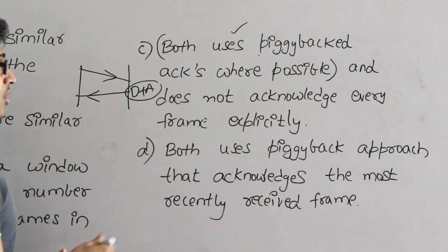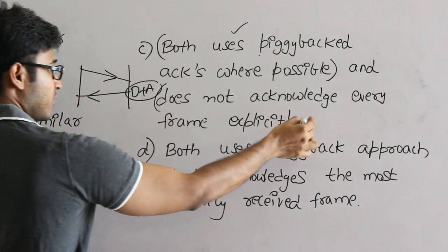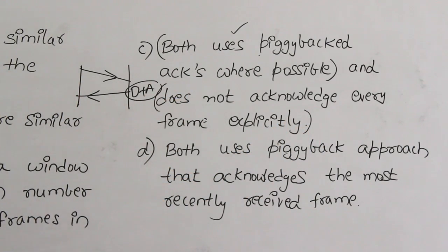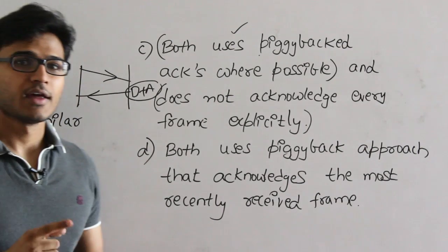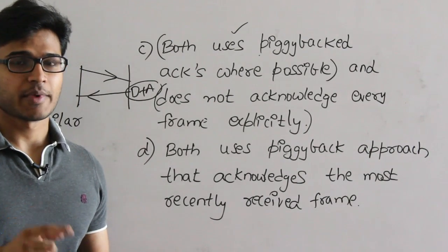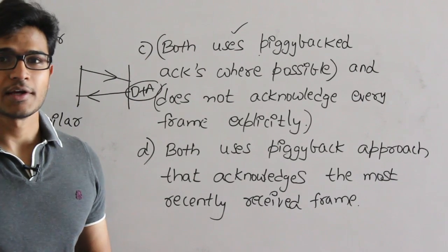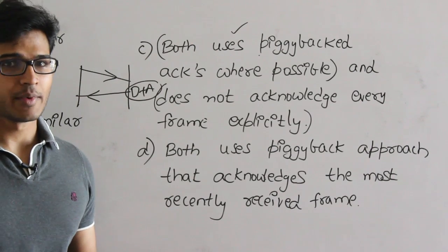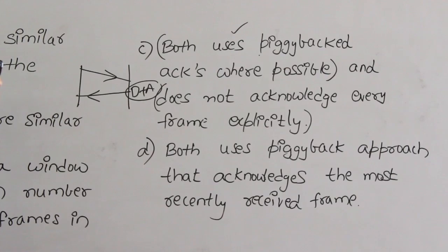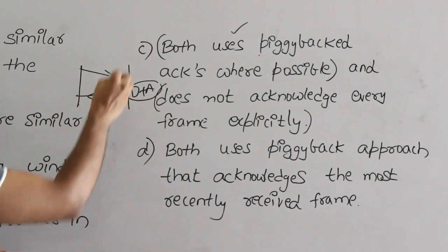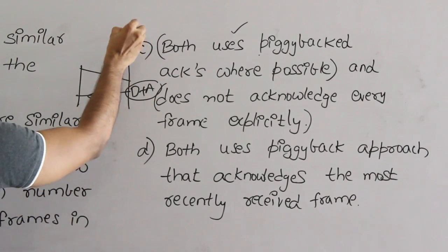That point is wrong. Even though GoBackN does not explicitly acknowledge every packet, SR is definitely going to explicitly acknowledge every packet. Selective Repeat protocol uses independent acknowledgments and GoBackN uses cumulative acknowledgments. Therefore, this second point is wrong, so option C is wrong.